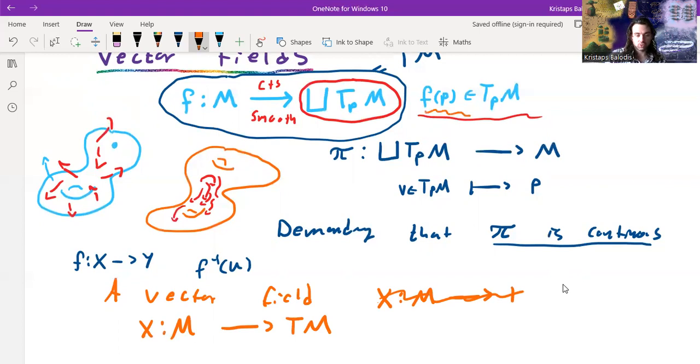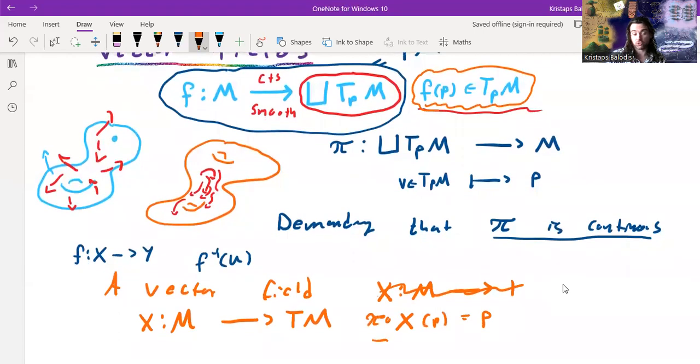And such that, we want to make sure, I want to encode this definition that the FP is in TPM. So it should be that the bundle composed with the projection map, that should be equal to P. In other words, this composition of maps is equal to the identity.